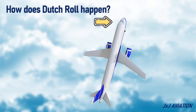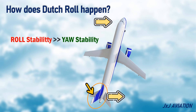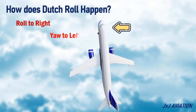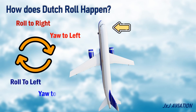Because of this yaw towards the right, the wind hits the vertical stabilizer from the left, causing the vertical stabilizer to move towards the right. At this point, let's assume that the roll stability is stronger than the yaw stability. The roll stability will cause the aircraft to roll towards the right. However, the forces at the vertical stabilizer will yaw the aircraft towards the left. This becomes a continuous loop, as the roll and yaw are acting in opposite directions, and the oscillations will continue until a corrective input is given.